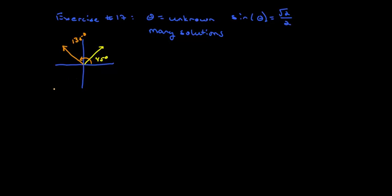Now sine is going to be negative down here and here, so we don't have to worry about that. So what we want to do is get all the multiples, all the angles that are coterminal with 45. So let's do that one.